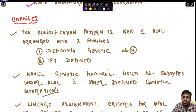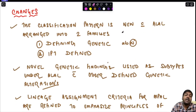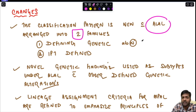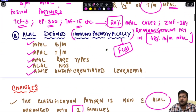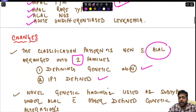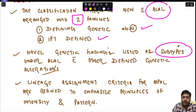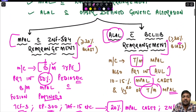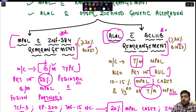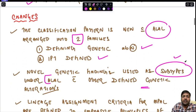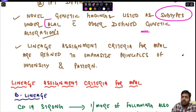The changes in the WHO fifth edition versus the previous fourth edition include: a new classification pattern arranging acute leukemia of ambiguous lineage into two families — those with defining genetic abnormality and those immunophenotypically defined. Novel genetic findings are listed as subtypes under acute leukemia of ambiguous lineage with other defined genetic alterations, as already discussed.